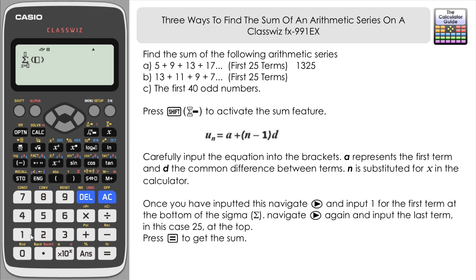Let's carefully input this into the brackets. First term a is 13. Then, recognizing it's x instead of n, we put (x - 1) in brackets. For clarity, I'll add a times sign, then d.